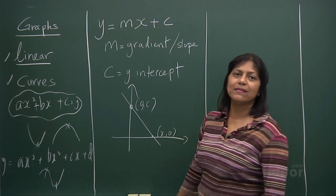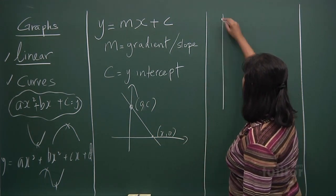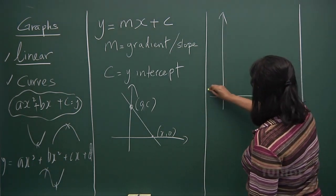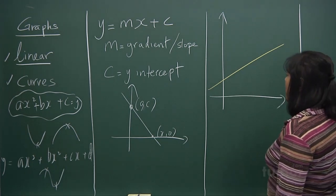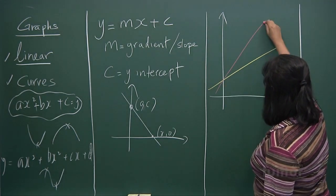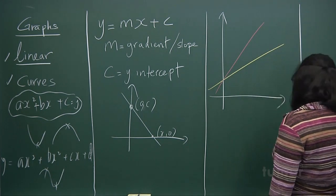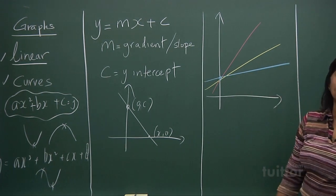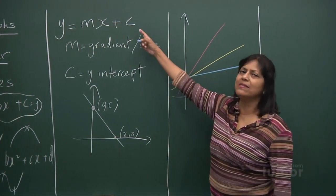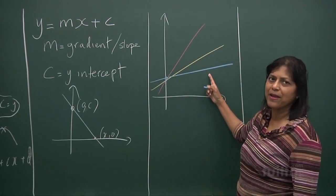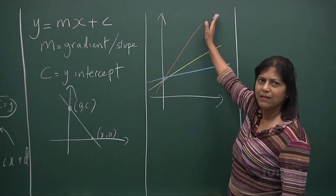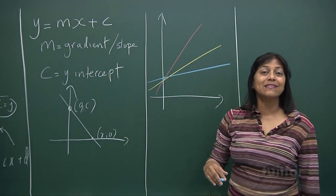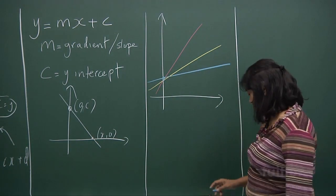The slope is the gradient. Now the gradient is important because if I have a graph with a slope like this, another graph with a slope this way, and a third graph with a slope this way, they're all passing through the same point. They have the same c, but the slopes are varying. The red is steepest, the yellow is in between, and the blue is the least steep.